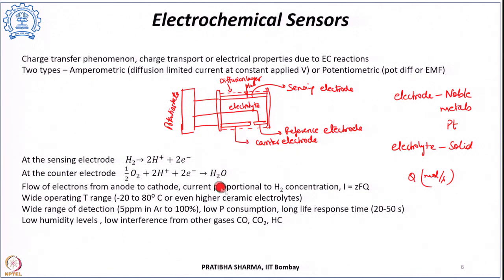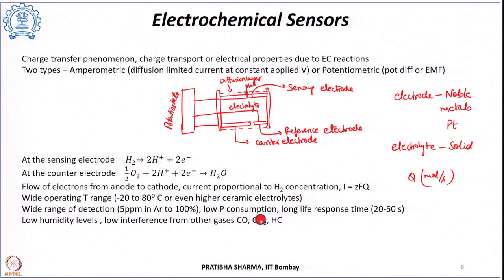The measured current is calibrated to determine hydrogen concentration. These sensors have a wide operating temperature range from −20°C to 80°C, with care needed to prevent the electrolyte from freezing. Even higher temperature ranges can be achieved using ceramic electrolytes. Detection range extends from 5 ppm in argon to 100%, with very low power consumption, though response time tends to be somewhat longer.